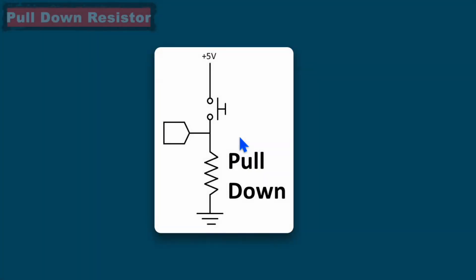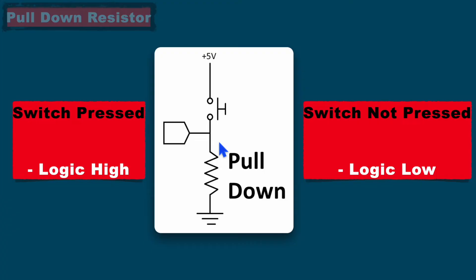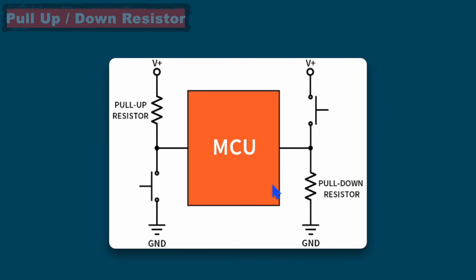Similarly, with a pull-down resistor we can avoid the floating state scenario. When the switch is pressed, it will be at +5 volts or logic high state. But when the switch is not pressed, it will not make a short circuit, so it will be pulled down and we will get logic low at the input. So with pull-up or pull-down resistors, we can remove the floating state scenario.